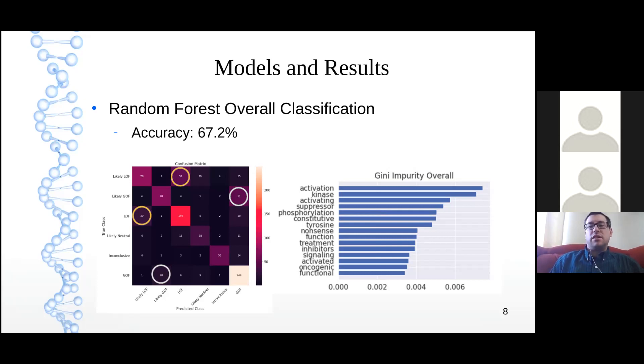Over on the right side, we have a genie impurity graph that shows the most important words in this classification model. In these top 15 words, we have three forms of the word activate. This is important in cancer because when you're talking about genes that are involved specifically in growth and development, if those get over-activated or overstimulated and out of control, that's one way cancer can develop. The other word here that jumps out is suppressor. Tumor suppressor genes are very important in preventing cancer. They're the genes that check and control our cell growth and division. So when those get mutated and we lose those, cancer is also likely to develop.